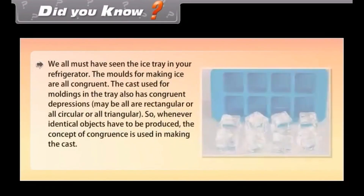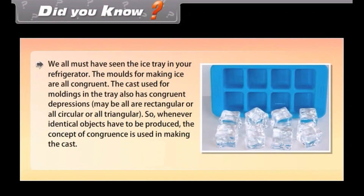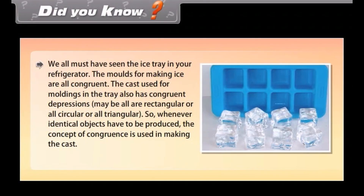Did you know? We all must have seen the ice tray in a refrigerator. Observe that the moulds for making ice are all congruent. The cast used for moulding in the tray also has congruent depressions — maybe all are rectangular, or all circular, or all triangular. So whenever identical objects have to be produced, the concept of congruence is used in making the cast.